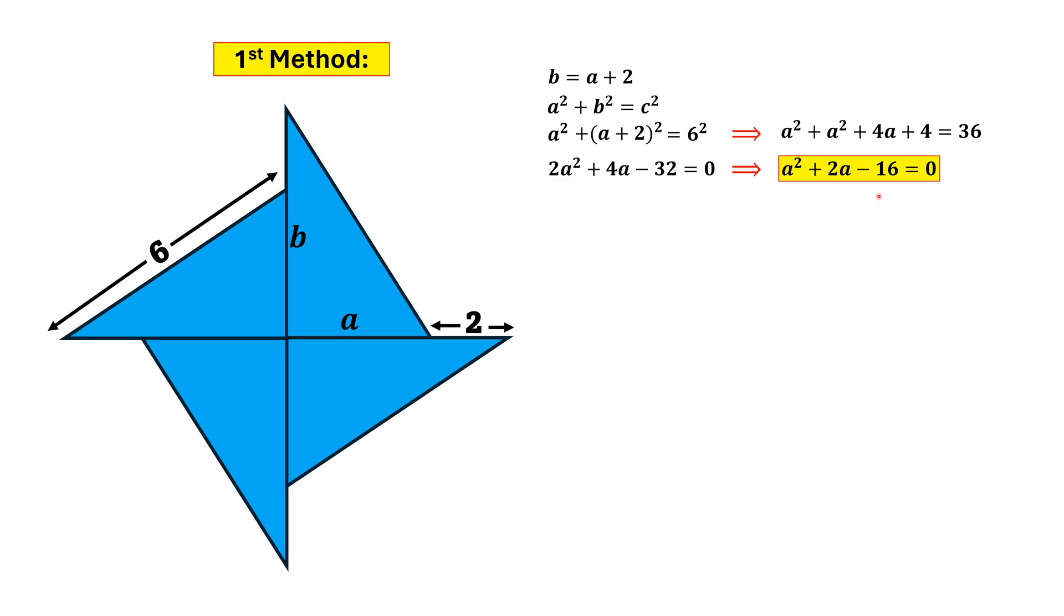Since this equation is a quadratic equation, using the famous quadratic formula on this equation, we will get a as this one. And if we simplify, we will get a = (-2 ± 2√17) / 2. And if we divide by 2, then we will get a = -1 ± √17.